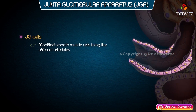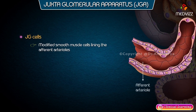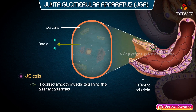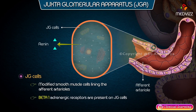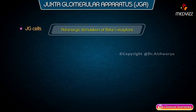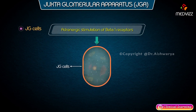JG cells are modified smooth muscle cells lining the efferent arterioles. Juxtaglomerular cells contain granules which contain renin. Beta-1 adrenergic receptors are present on juxtaglomerular cells, and adrenergic stimulation of these beta-1 receptors results in release of renin from the granules of the JG cells.